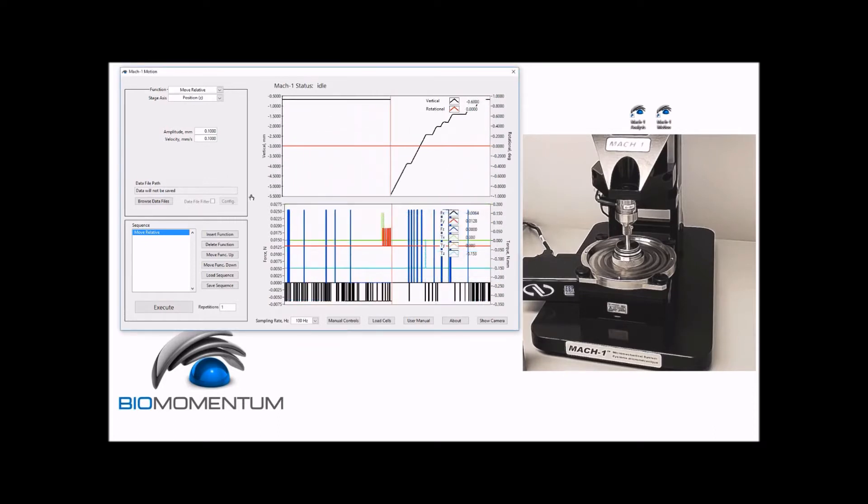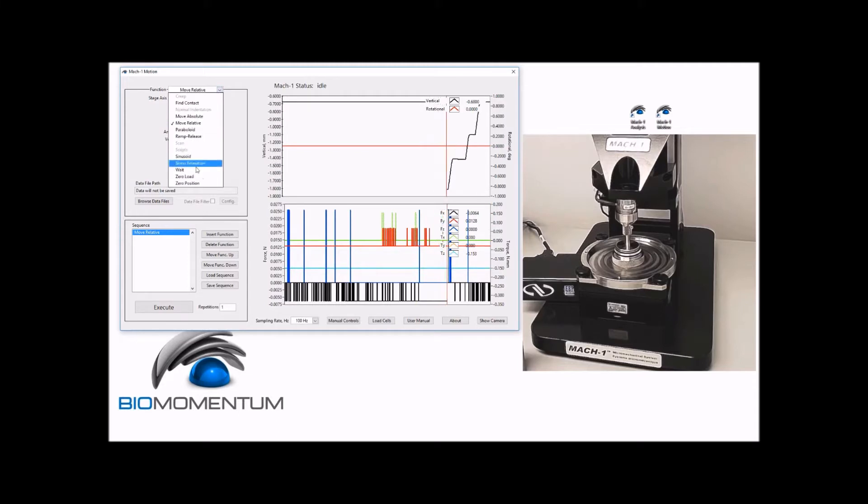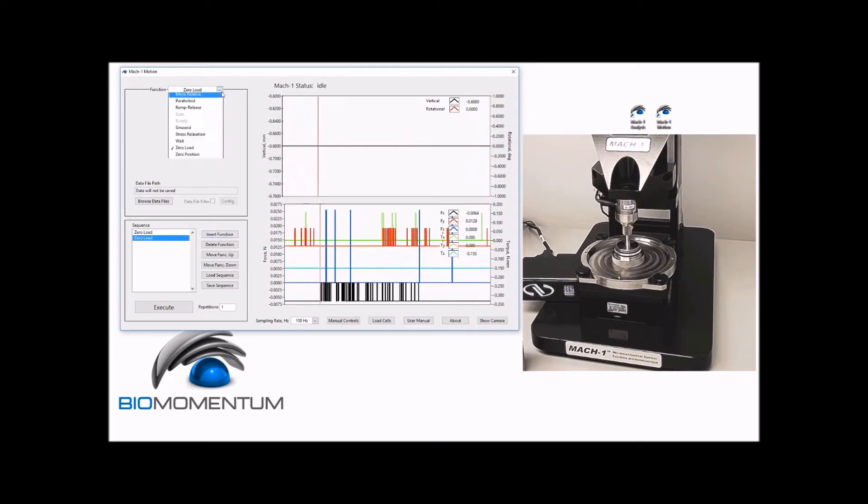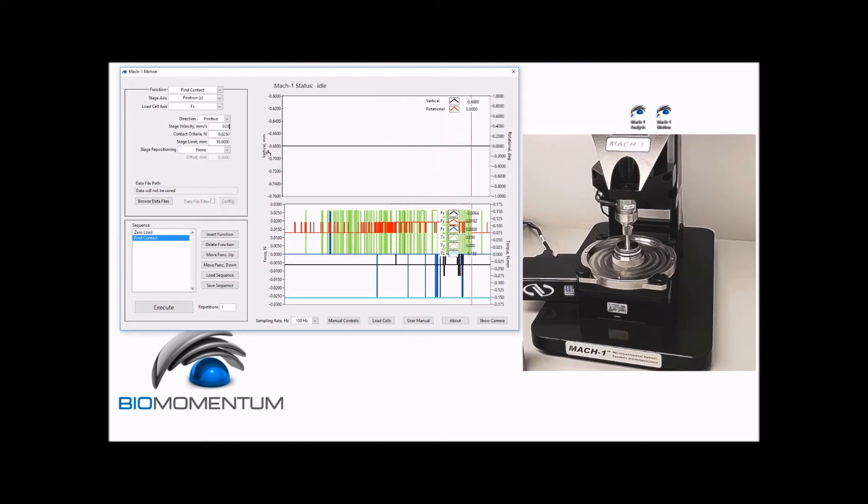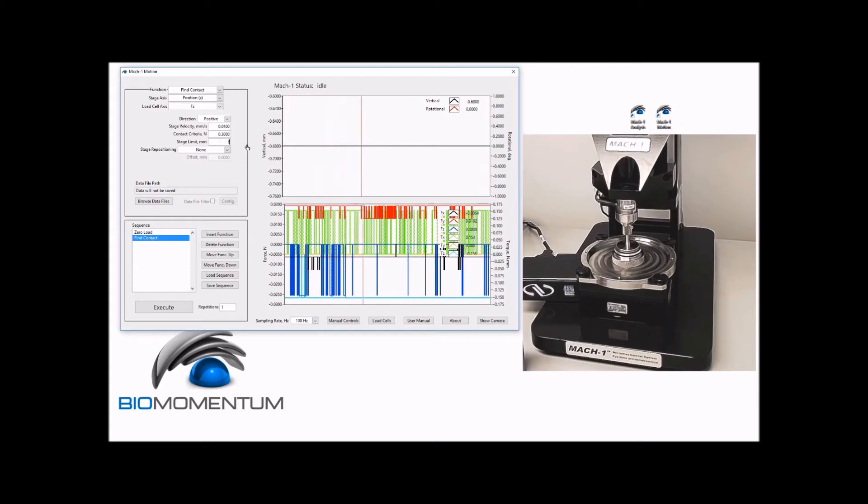Find the vertical position of the bottom platen and set it as the reference by performing the following test sequence. A zero load followed by a fine contact with the z position as a stage axis in the positive direction and a velocity of 0.01 mm per second, a contact criteria of 0.3 N, a stage limit of 3 mm,